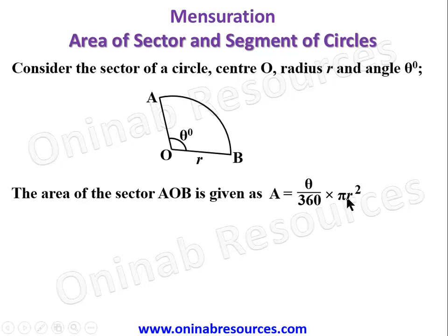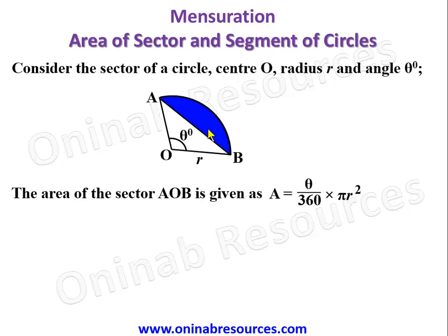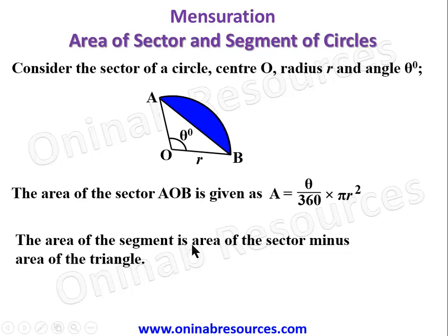Now if you draw a chord from A to B, we discover that the blue shaded part is the segment of the circle. How do we calculate the area of the segment? We calculate the area of triangle AOB and find the difference between the two areas. So the area of the segment is the area of the sector minus the area of the triangle.